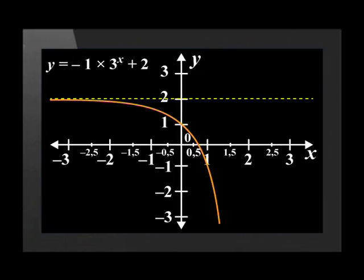Just out of interest, let's look at what this function would look like if we change the value of a to negative 1. The asymptote is still at y is equal to 2, and the graph is still moving away from the asymptote.